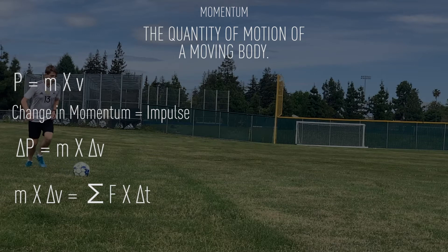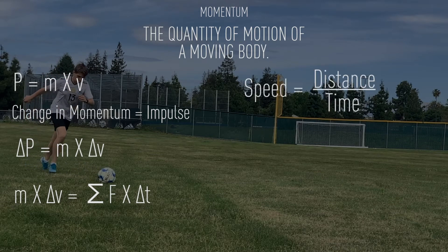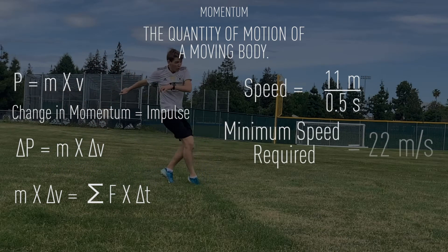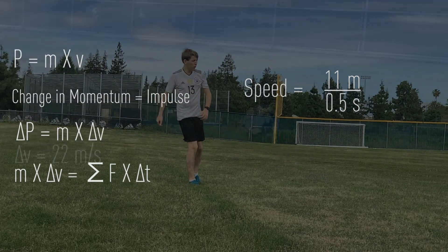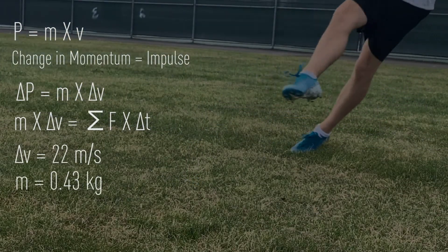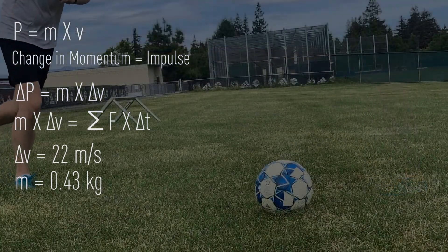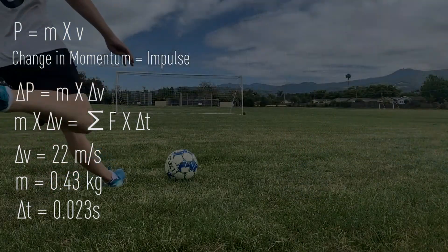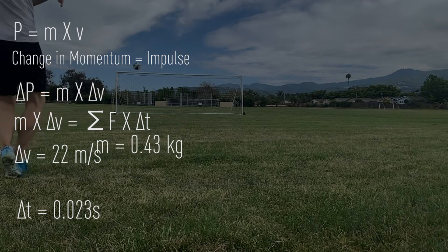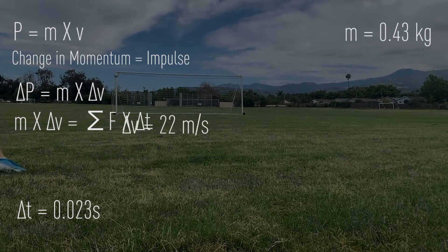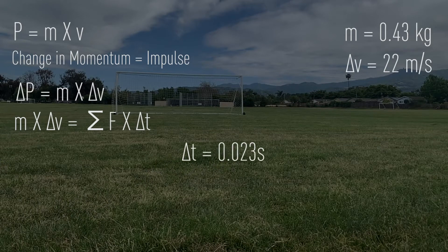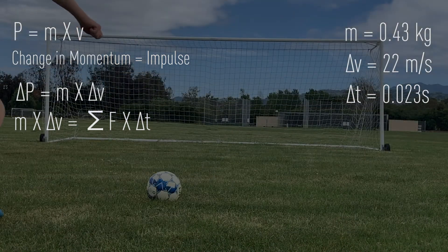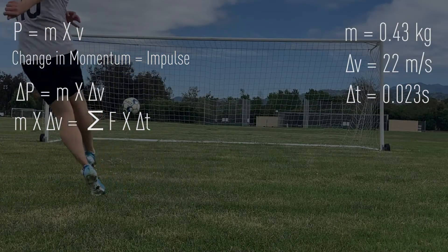Let's start by calculating the minimum velocity required to make it into the goal. To go 11 meters in 0.5 seconds or less, we do 11 meters over 0.5 seconds and find that the ball has to reach a top speed of at least 22 meters per second. I weighed the ball and found out that it has a mass of about 0.43 kilograms. We also know that on average, your foot is in contact with the ball for about 0.023 seconds. Our mass is 0.43 kilograms, the change in velocity is 22 meters per second because the ball starts at rest, and our change in time is 0.023 seconds, because that is the time it takes for the ball to accelerate to its top speed, as it stops accelerating once it leaves my foot.